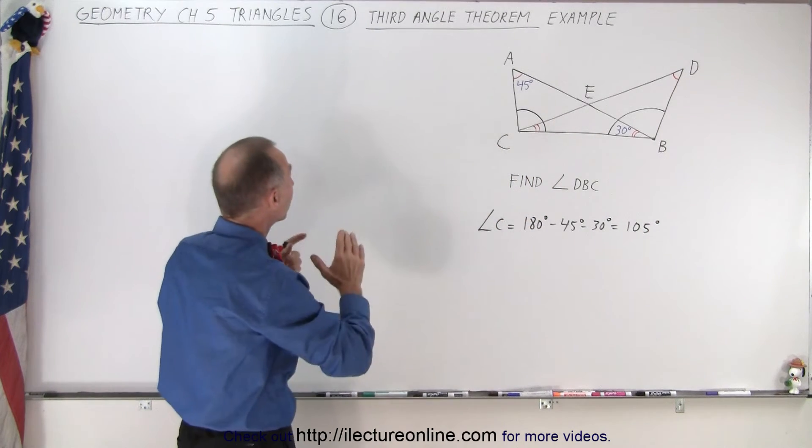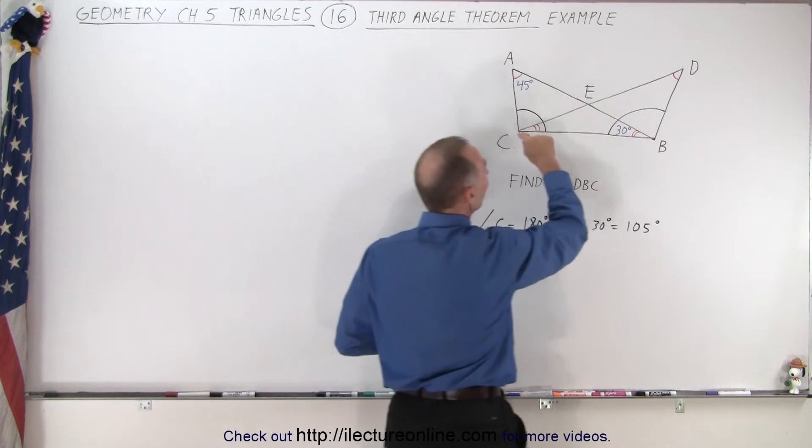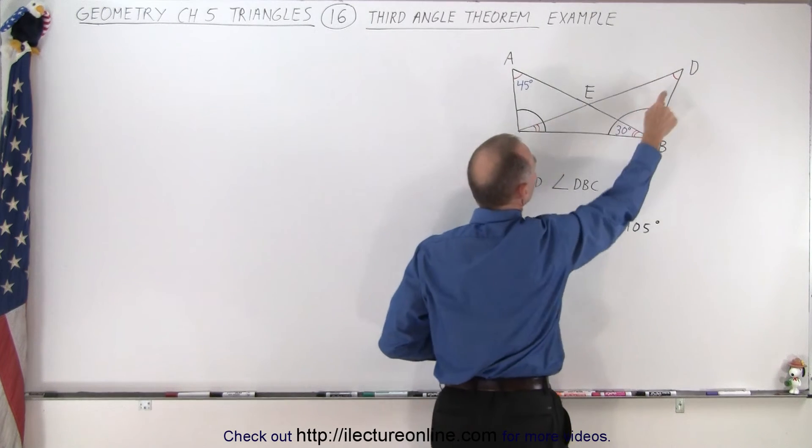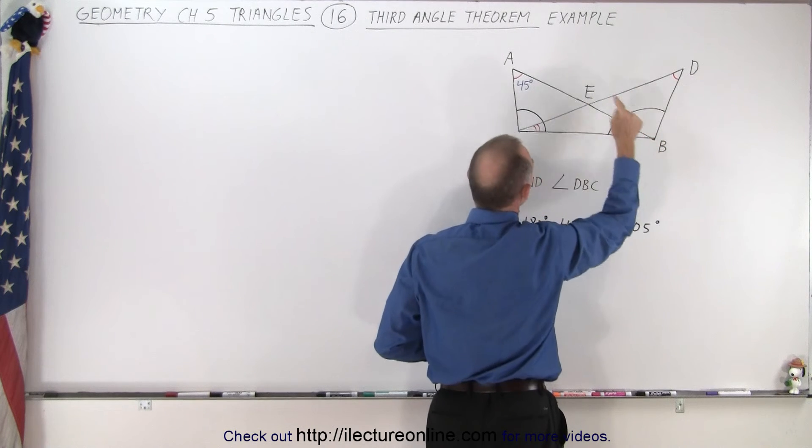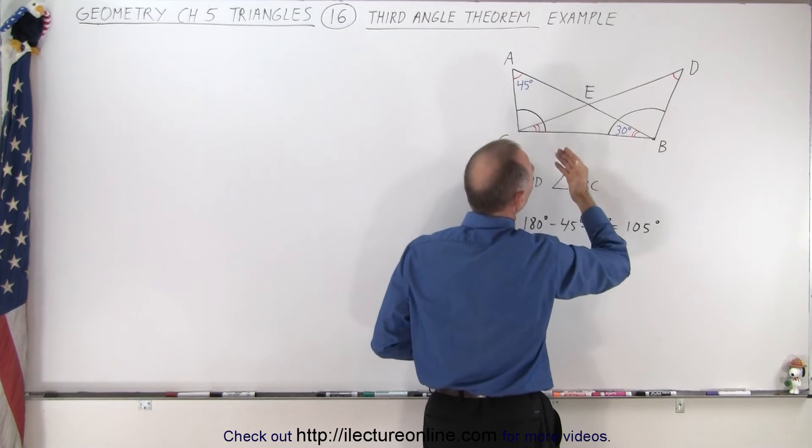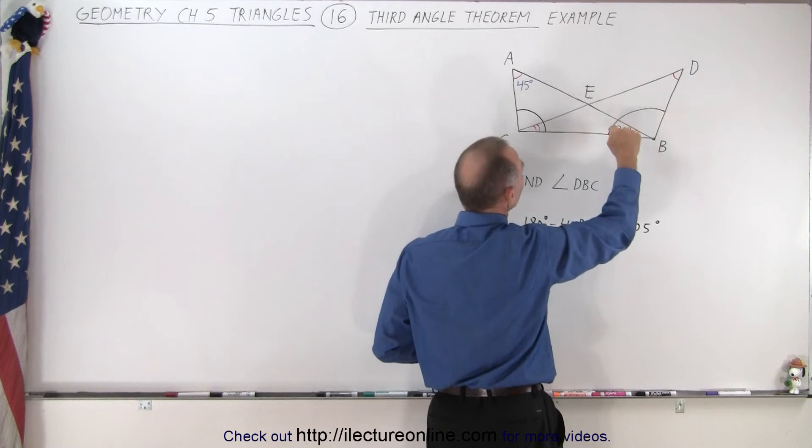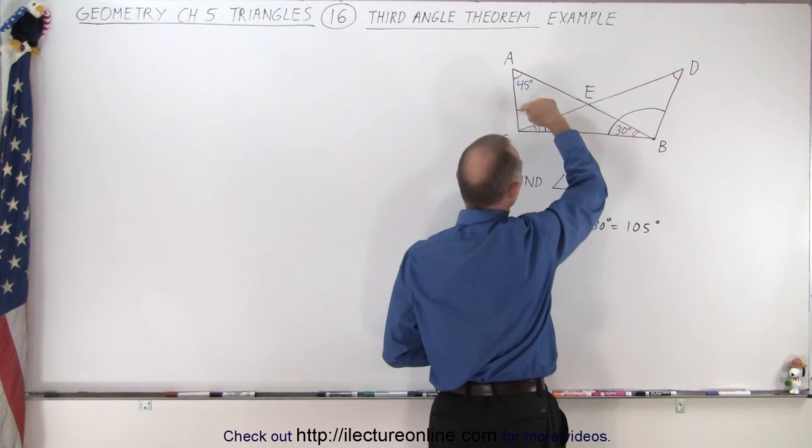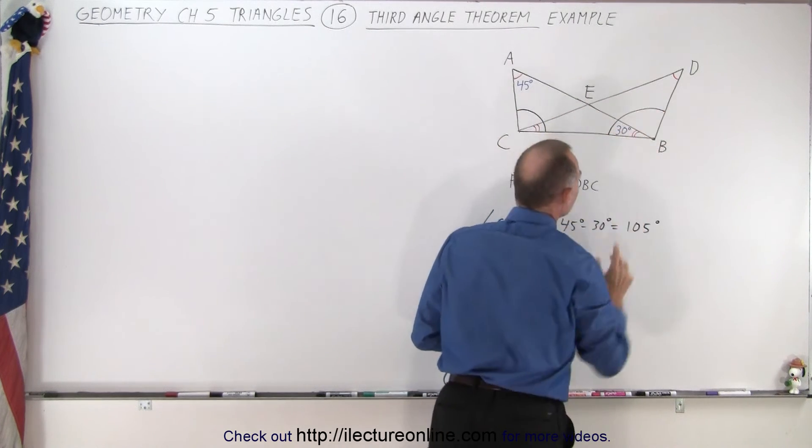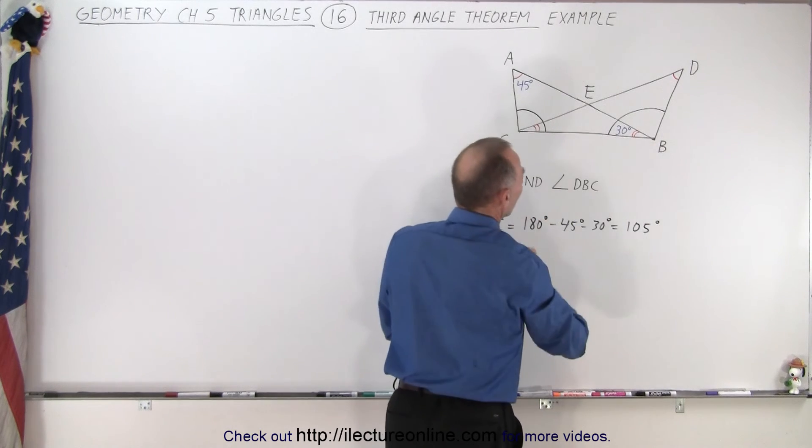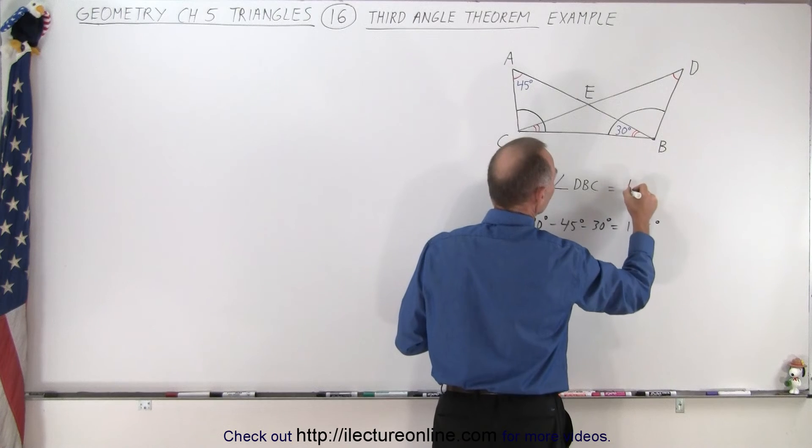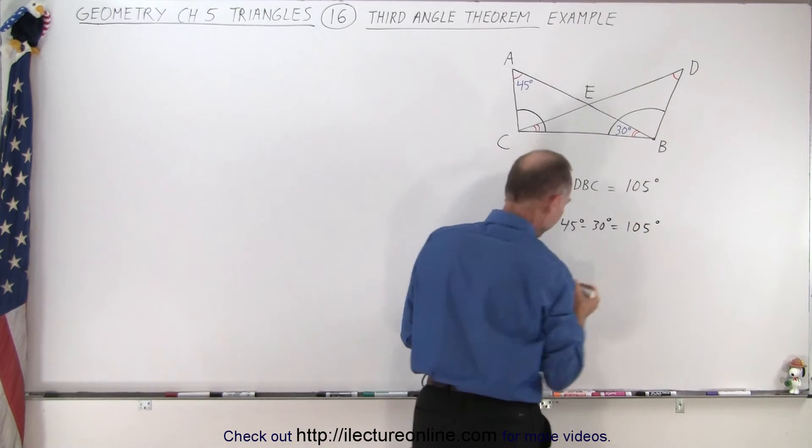Now we can use the third angle theorem. Since this angle is congruent to this angle and this angle is congruent to this angle, by default the third angle must be equal. That means this angle here must equal this angle, so it's also 105 degrees.